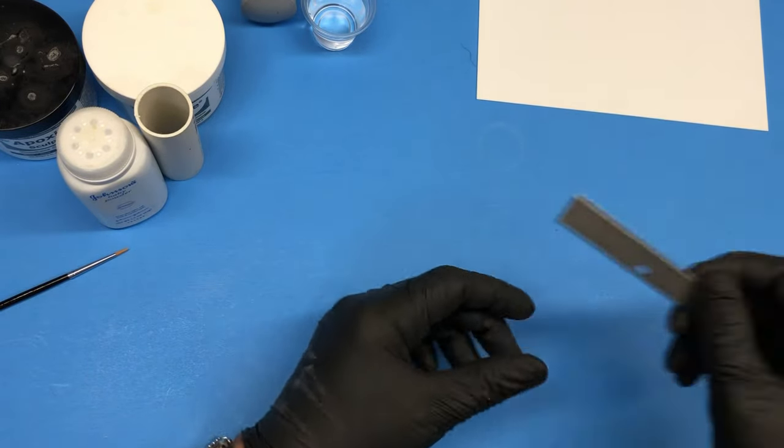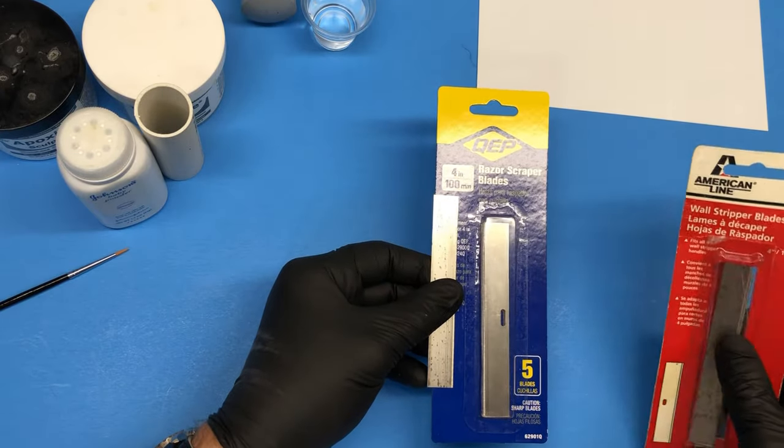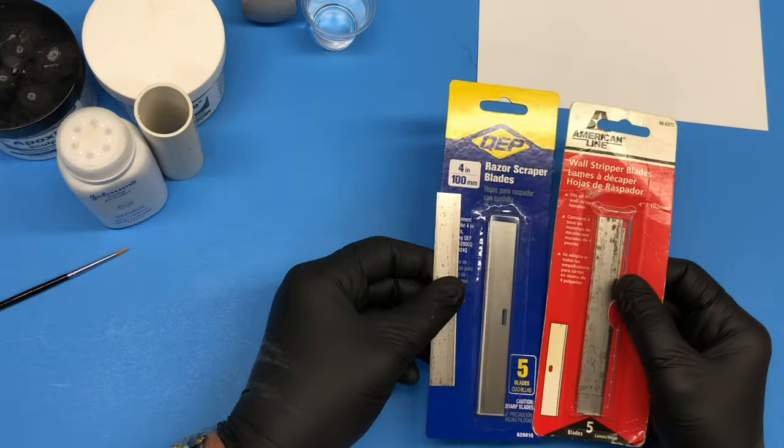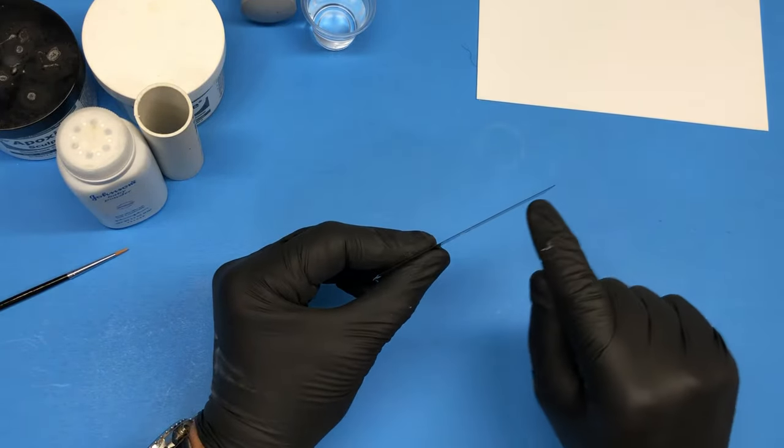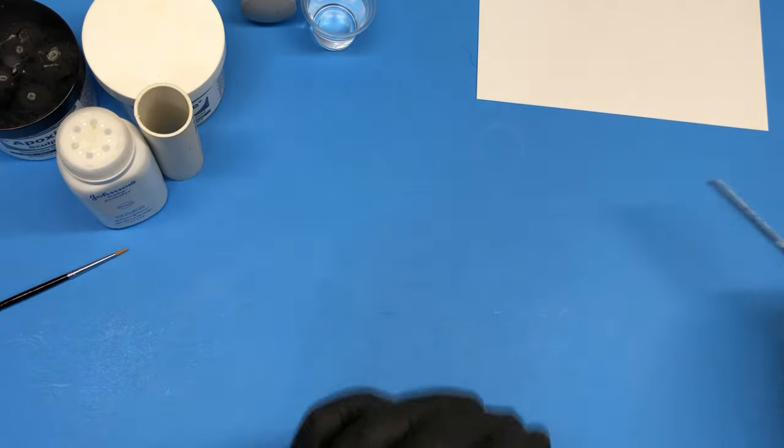Last but not least, you need a stripper blade or scraper blade. They sell them at Walmart or Home Depot. They're not really that expensive and usually come in a pack of five. The reason you need those is they have a razor-sharp edge, which makes it easier to cut straight edges and cut lengths.